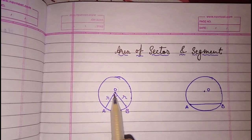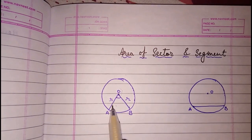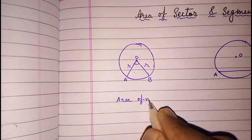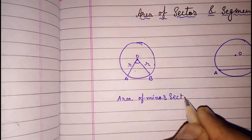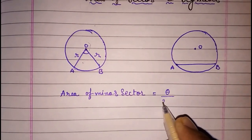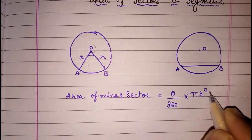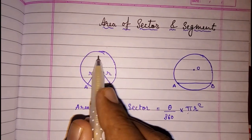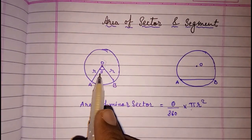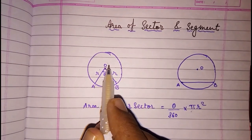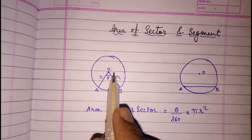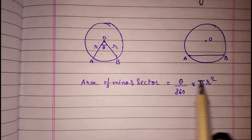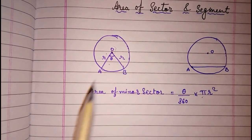So this smaller part of the circle, when we cut it in the form of a sector, is called the minor sector, and the remaining part is called the major sector. If we want to find the area of the minor sector, we have a simple formula: theta by 360 into pi r square. We know the area of the circle is pi r square. The whole circle gives an angle of 360 degrees, and this sector is a fraction theta out of 360. So we take theta upon 360 into pi r square to get the area of the minor sector.